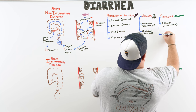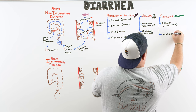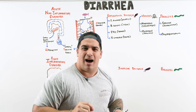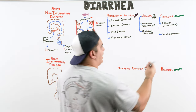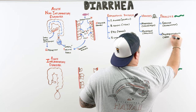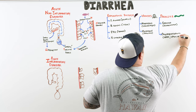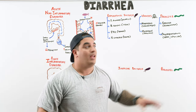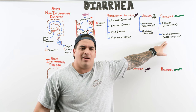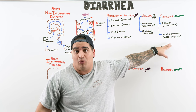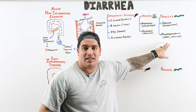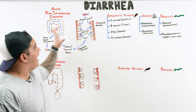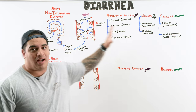The second parasite is Cryptosporidium. This one is interesting because you really need to be immunocompromised to get it. Associate this with AIDS patients with a CD4 count usually less than 100. It's an opportunistic infection and can be spread through travel, foodborne contact, and similar routes.